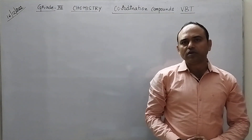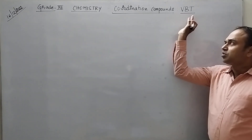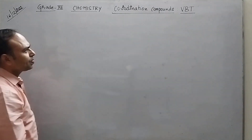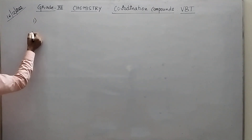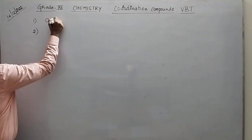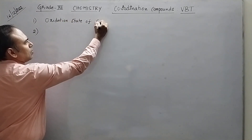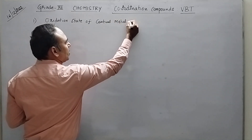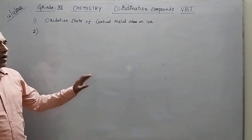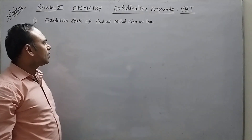Good evening students. Today we are going to study an important topic in grade 12 chemistry: coordination compounds — Valence Bond Theory, also known as VBT. In this, we will learn how to draw the structures. Before you start, follow two important steps. Number one: identify the oxidation state of the central metal ion — it can be an atom or ion. Always try to find out the oxidation state first.